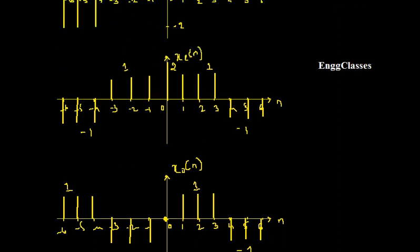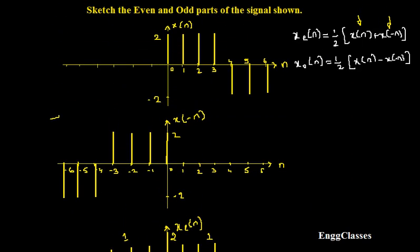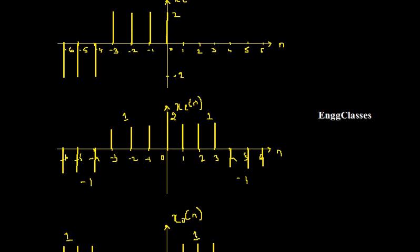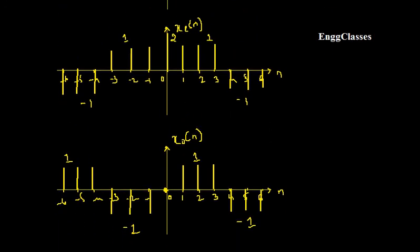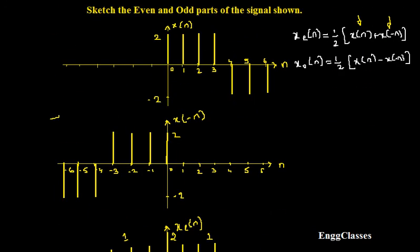This is how we sketch the even and odd parts of any given signal. In this particular example we considered a discrete time signal; in earlier numericals we had considered continuous time signals. We should know how to implement the same concept for discrete time signals as well. I hope you understood — if there are any doubts, please let me know in the comment section. Subscribe to NG Classes for more videos on signals and systems. Thank you everyone for watching.